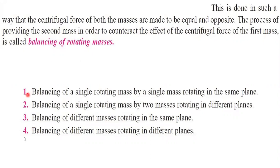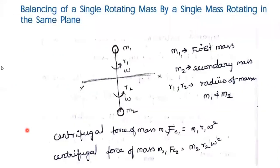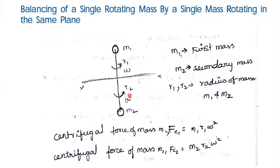We have four different cases, and cases three and four are very important. Case one is balancing of a single rotating mass by a single mass rotating in the same plane. In the same plane, one mass is present and to counter-attack it, another mass M2 is added in the same plane. The centrifugal force Fc1 = M1·R1·ω² and Fc2 = M2·R2·ω².